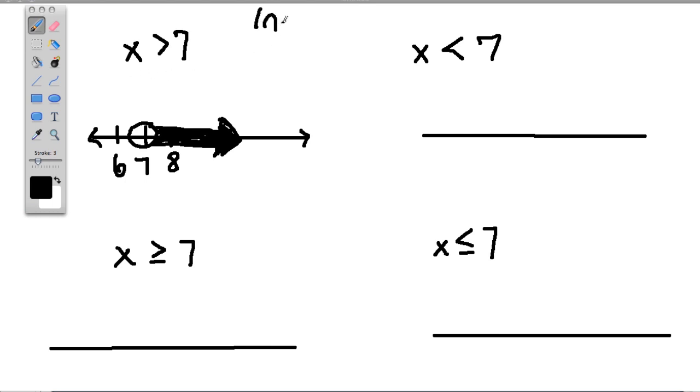Again, I'll write that down. These are inequalities. Let's look at our next example. This is saying the opposite. Every number, x, less than 7.